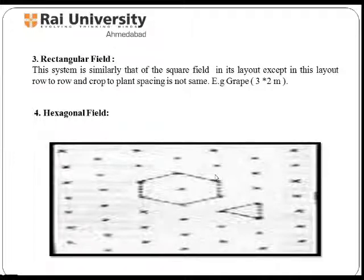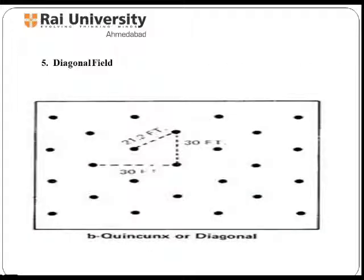In a hexagonal field, vegetable crops are planted in each corner of an equilateral triangle. In this way, we can plant six trees in the corners and the seventh one in the middle of the field. The planting distance must be the same for a hexagonal field.